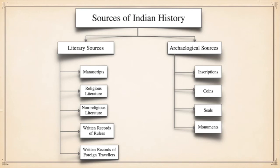Literary sources include the earliest writings which were written by hand on palm leaves or on the specially prepared bark of a tree called birch, which are known as manuscripts. There are also many literary sources like religious literature, non-religious literature, written records of rulers, and written records of foreign travelers.